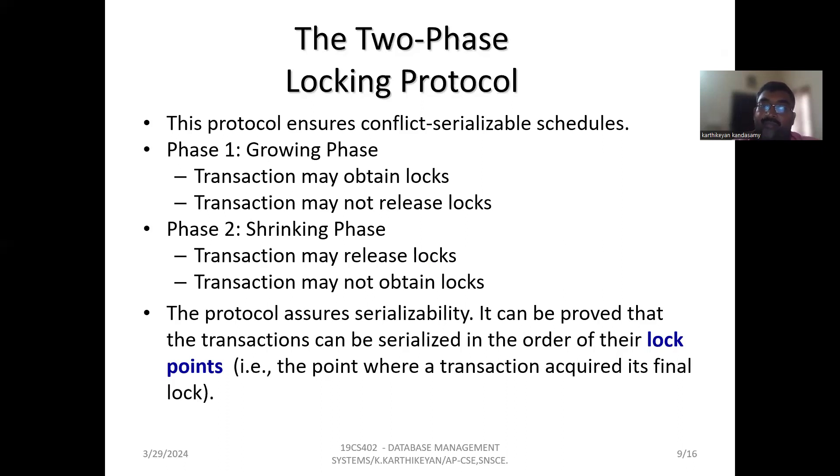Growing phase: the transaction may obtain locks, the transaction may not release locks. Shrinking phase: the transaction may release locks, the transaction may not obtain locks. The protocol assures serializability. It can be proved that transactions can be serialized in the order of lock points - the points where the transaction acquired its final locks.